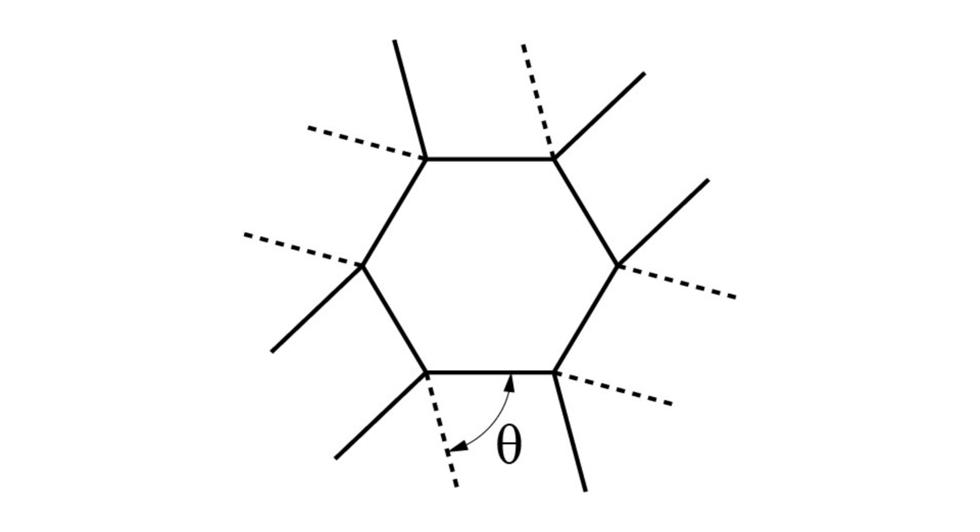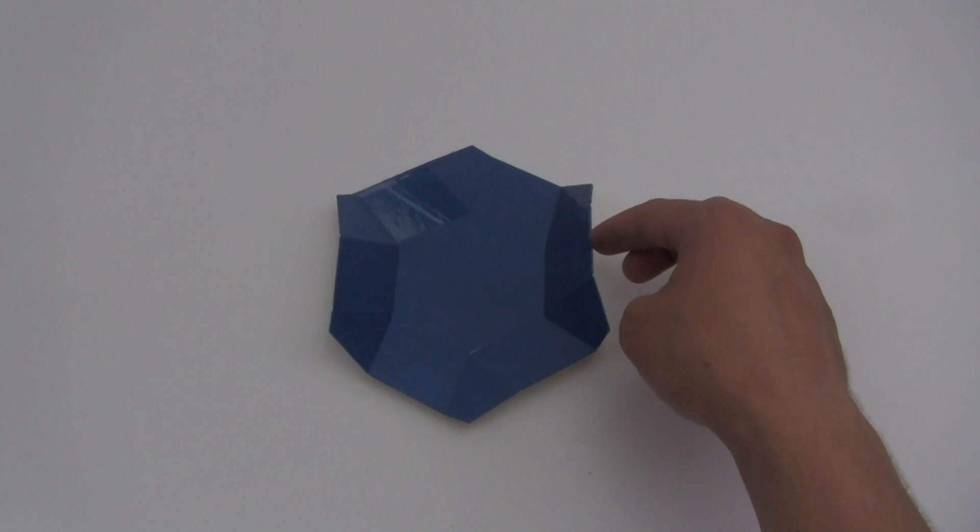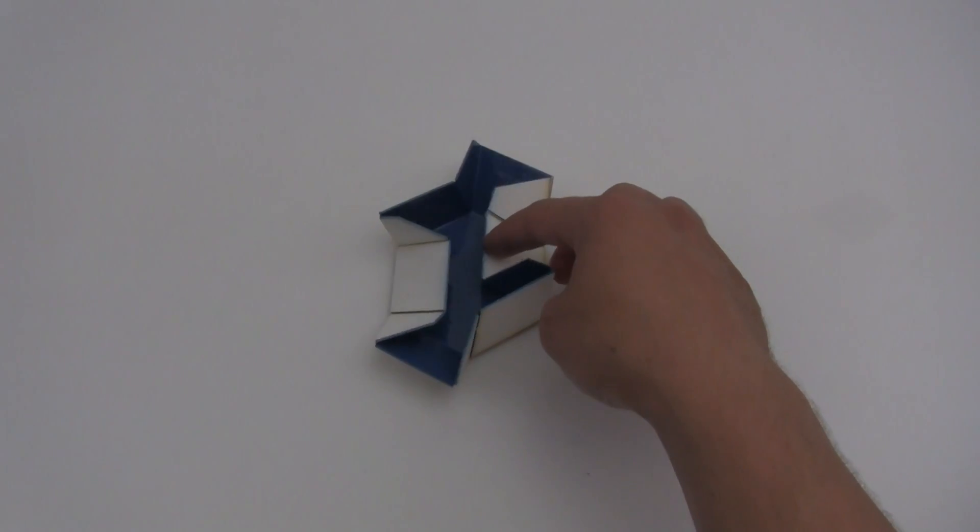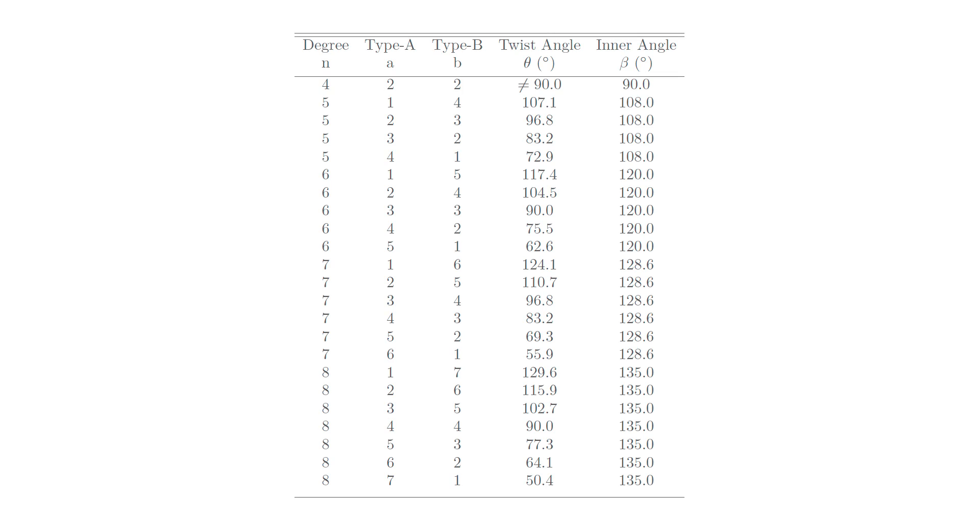We also show for any degree of polygon what the twist angle would be to create a rigidly foldable regular polygon. We have organized a table of rigidly foldable twist angles for polygons from square to octagonal.